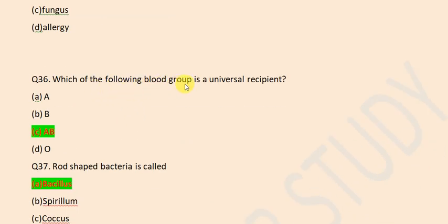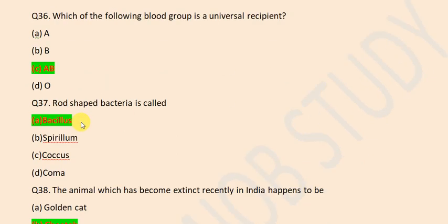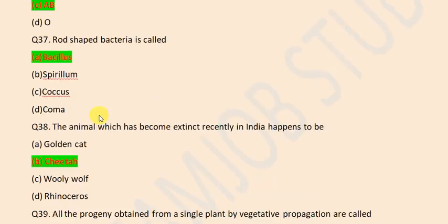Which of the following blood groups is a universal recipient? AB. Rod-shaped bacteria is called bacillus.